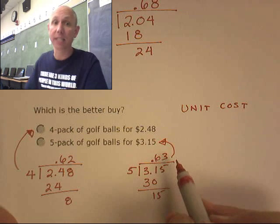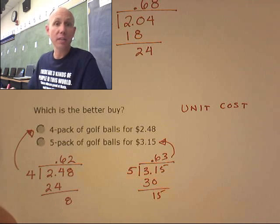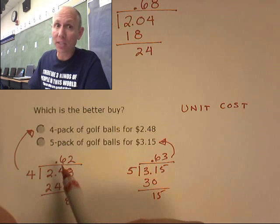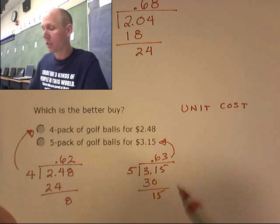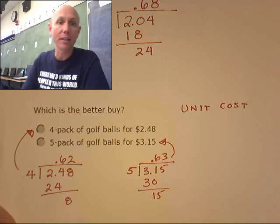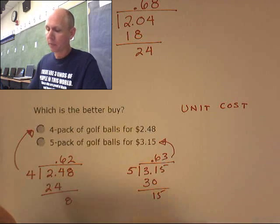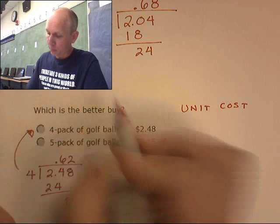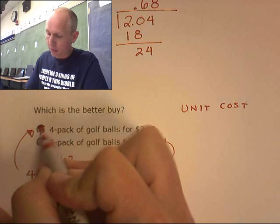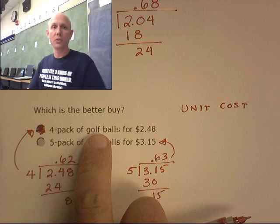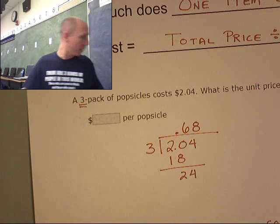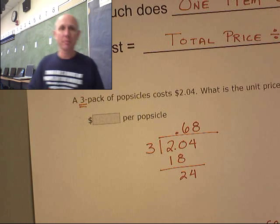So which one's the better deal? Would you rather pay 62 cents per golf ball or 63 cents per golf ball? And we're going to assume they're the exact same golf balls. So don't tell me, you know, which one's better. Which one is the better price for us? It's this one right here, right? Because this guy's only 62 cents per golf ball. And that is the whole lesson. Okay, there it is. I like that one.